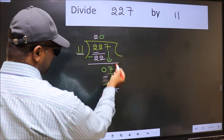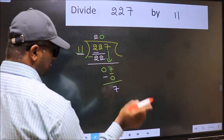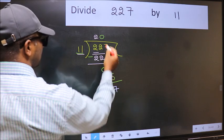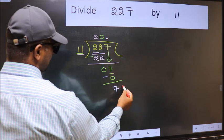Over here, we did not bring any number down. And 7 is smaller than 11. So now you can put dot and take 0.